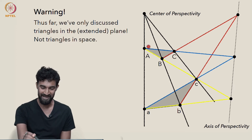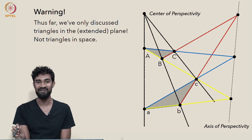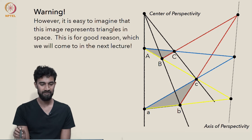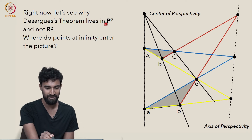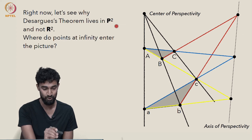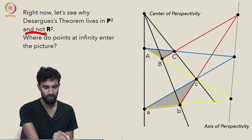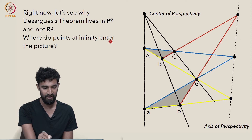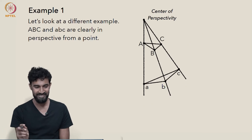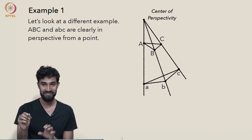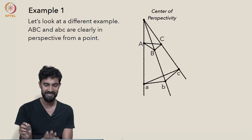There is a good reason why it looks like a 3D projection, and we'll settle that in the next section. For now, there's something else to consider when concentrating on the setting of P2: why does the theorem not hold in R2? Why do we need points at infinity, and where do they enter the picture? Just like with the first and second coincidences, we do need them. Let's see a quick example that makes it very clear why we need points at infinity to state Desargues' theorem.